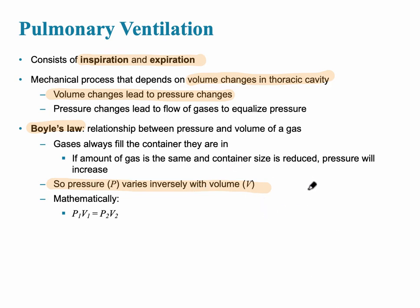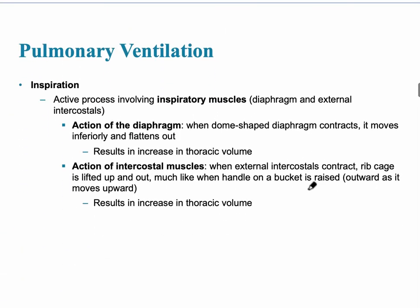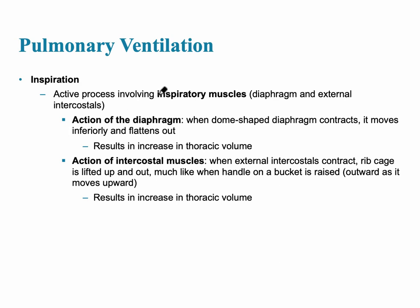Pressure varies inversely with volume. The first part of pulmonary ventilation is inspiration, and it occurs because of inspiratory muscles — specifically the diaphragm and the external intercostals. The diaphragm is a dome-shaped muscle, and when it contracts, it flattens out and increases the diameter of the thoracic cavity. The external intercostal muscles allow the ribcage to be lifted up and out. These two muscles are responsible for adequate ventilation of the alveoli.